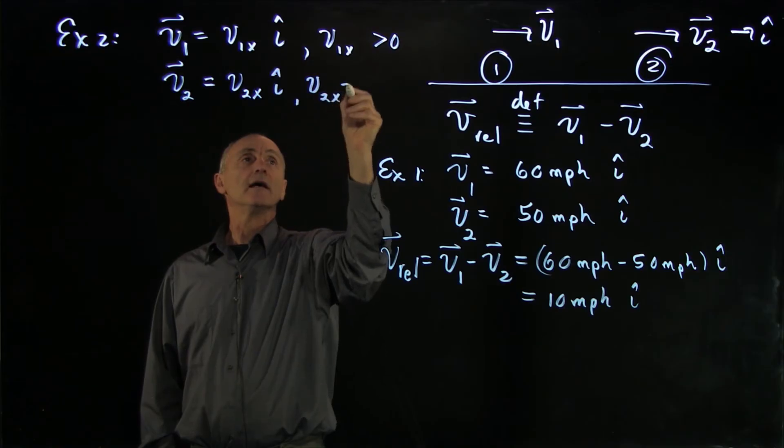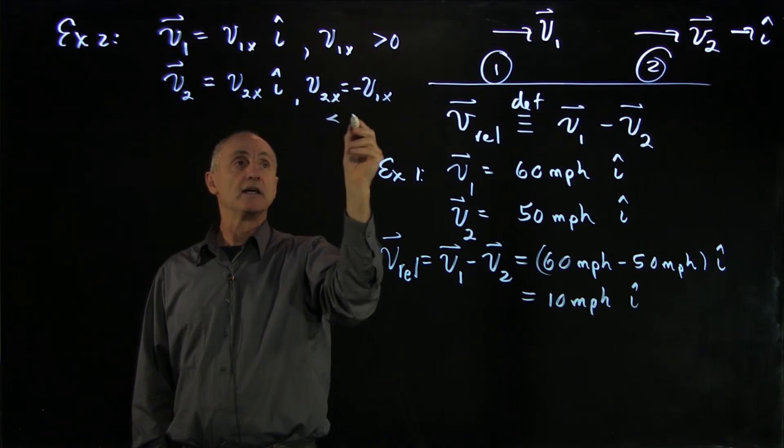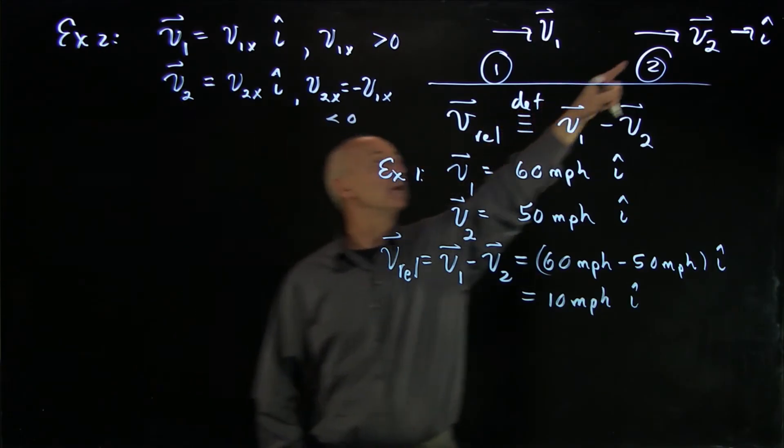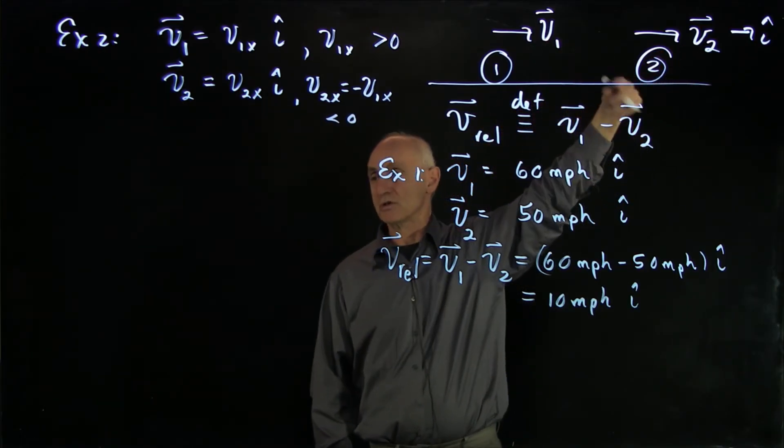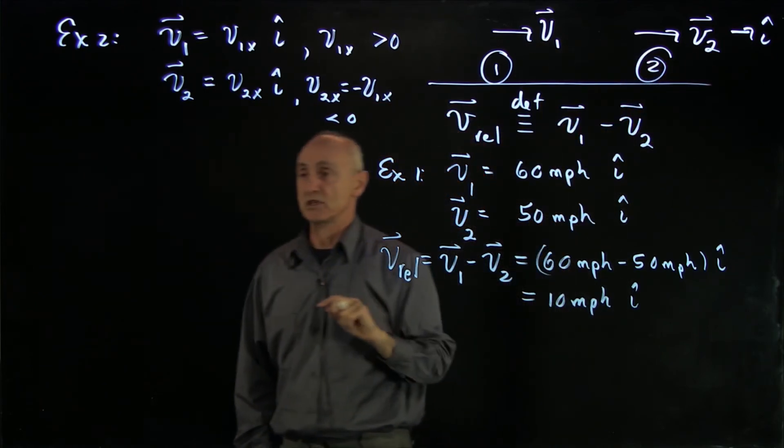And here, v2x is equal to minus v1x. So its component is negative. And even though we drew an arrow in this picture, the picture is still fine, because if the component is negative, it means it's moving in the opposite direction.